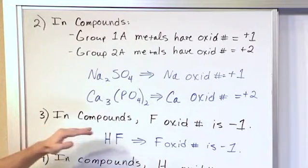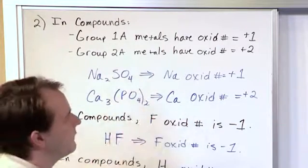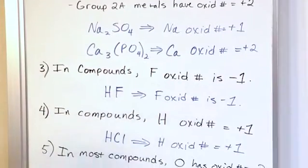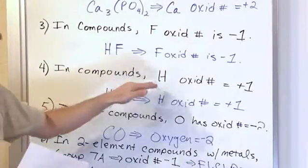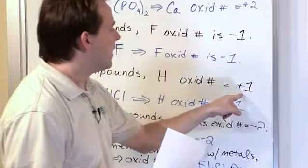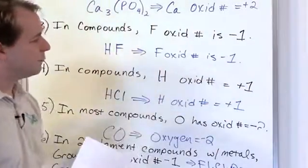So we go down to rule three. Do we have any fluorines? We don't have any fluorines. So we're done with that. We don't have that. Now we go and we see we do have a hydrogen. The oxidation number of this guy is plus one.